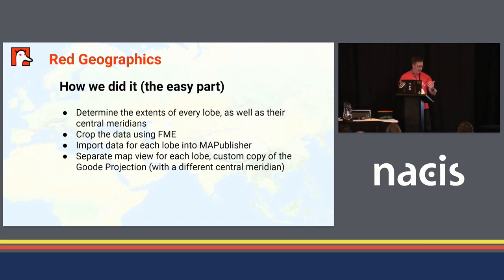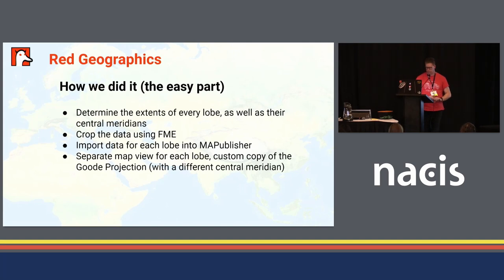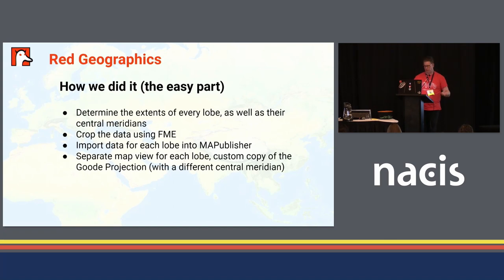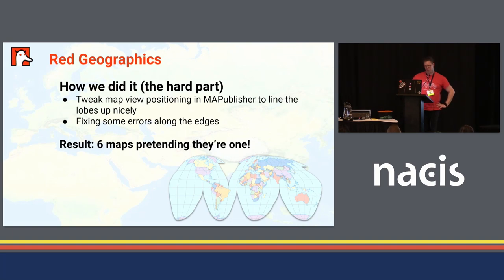So what did I do? First, I looked at the map and determined the extents of every lobe as well as their central meridians. Then I cropped my source data — Natural Earth in this case — to each of those lobes using FME. So per lobe of the projection, I had a separate set of source data. I imported all of those into MAPublisher and made a separate map view for every lobe, using a custom copy of the existing Goode's projection within MAPublisher and just changing the central meridian.